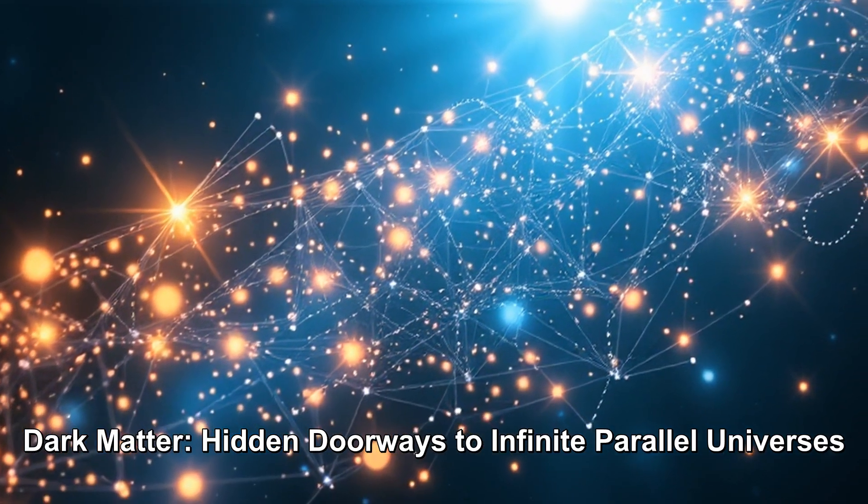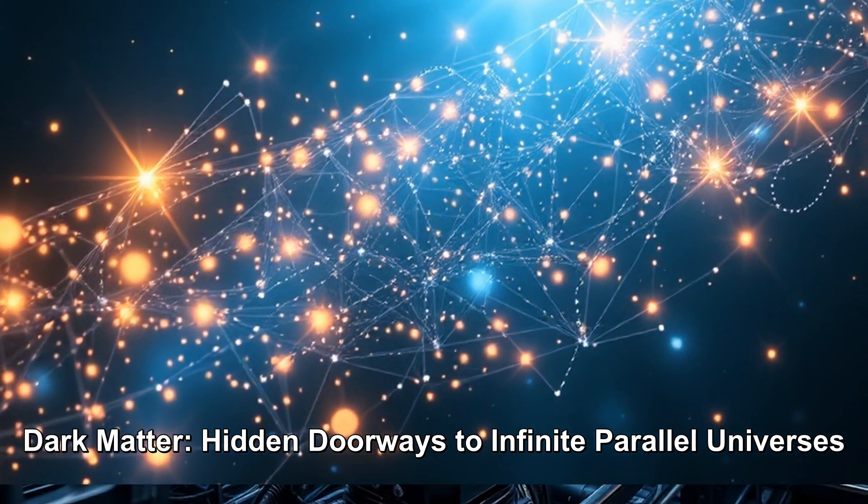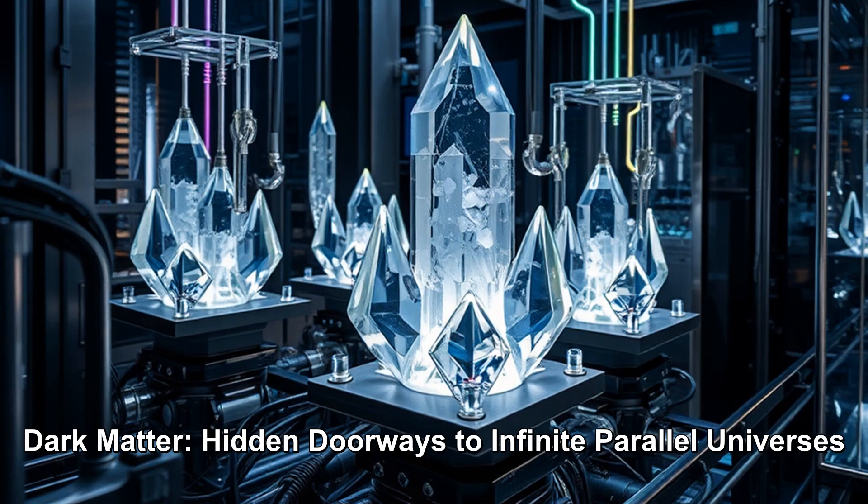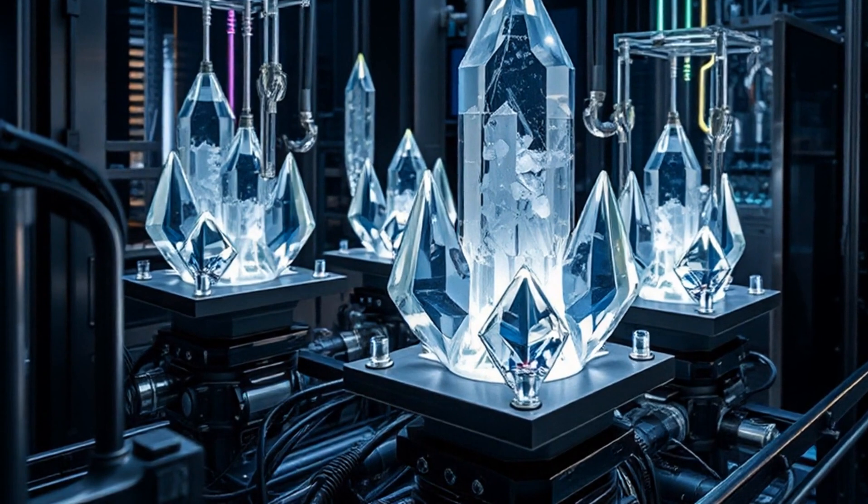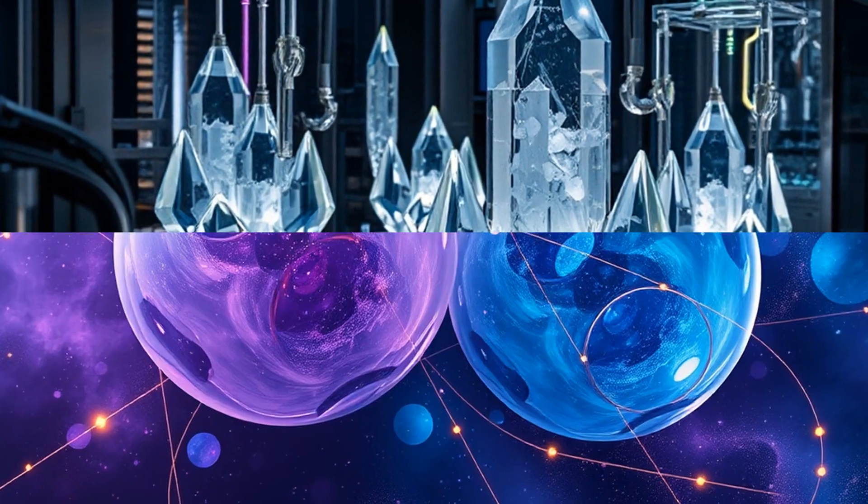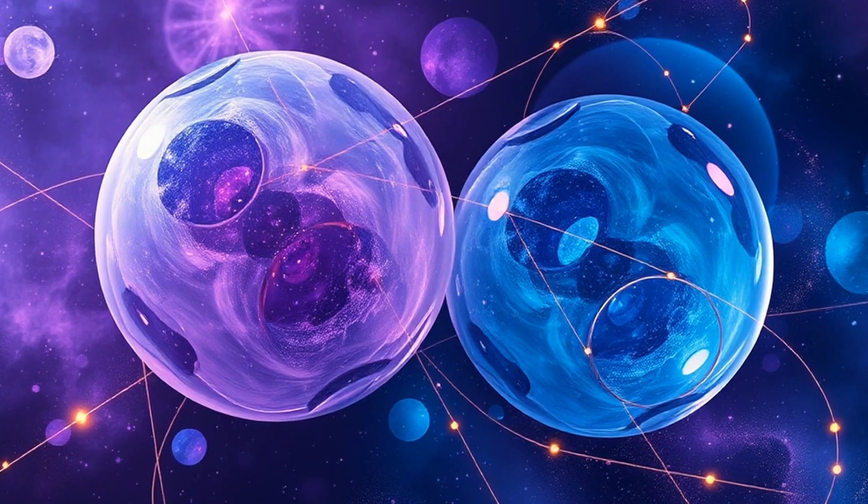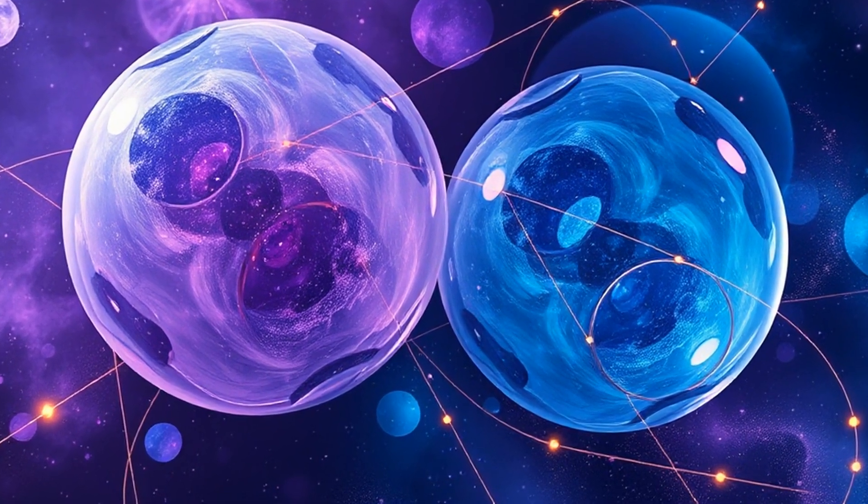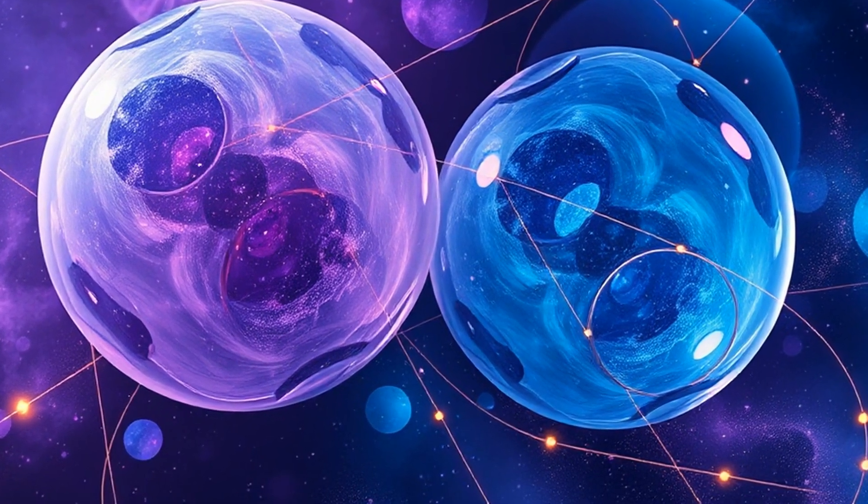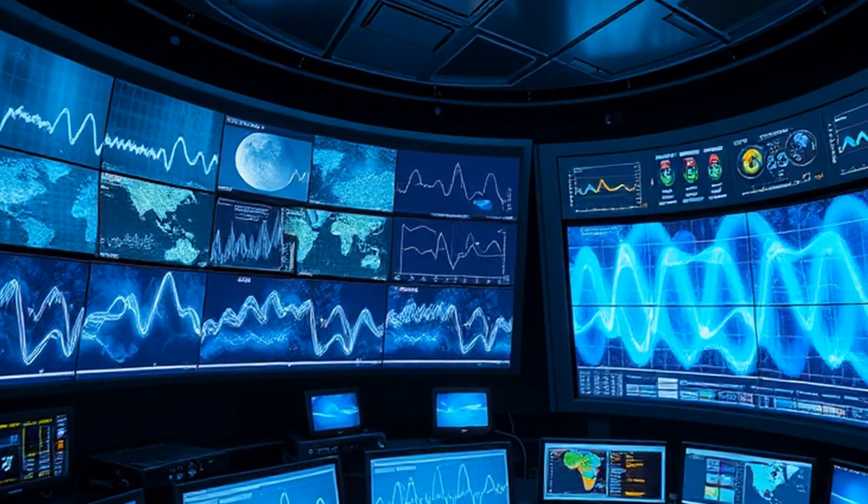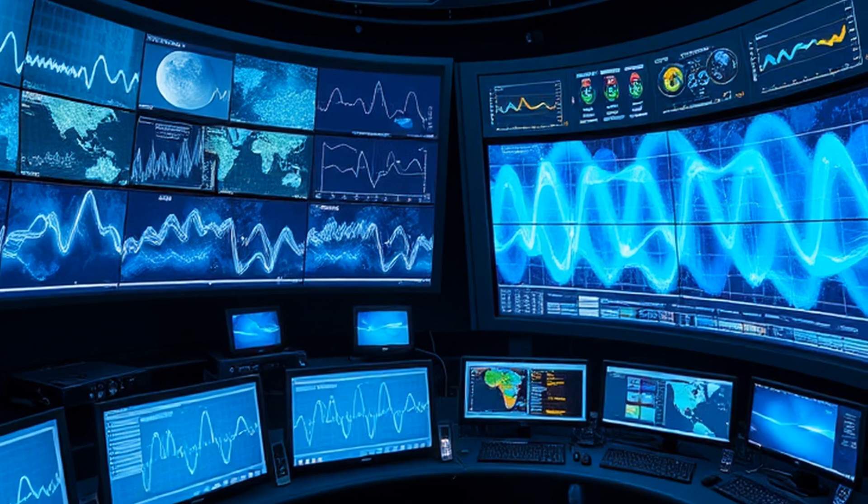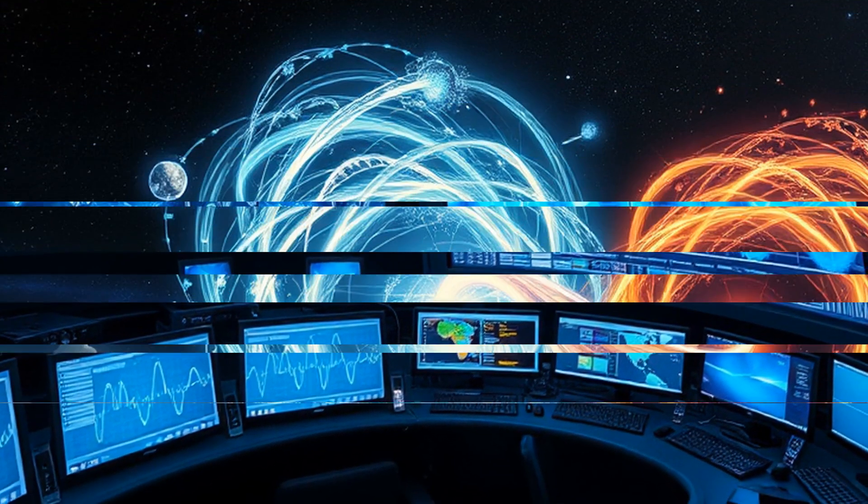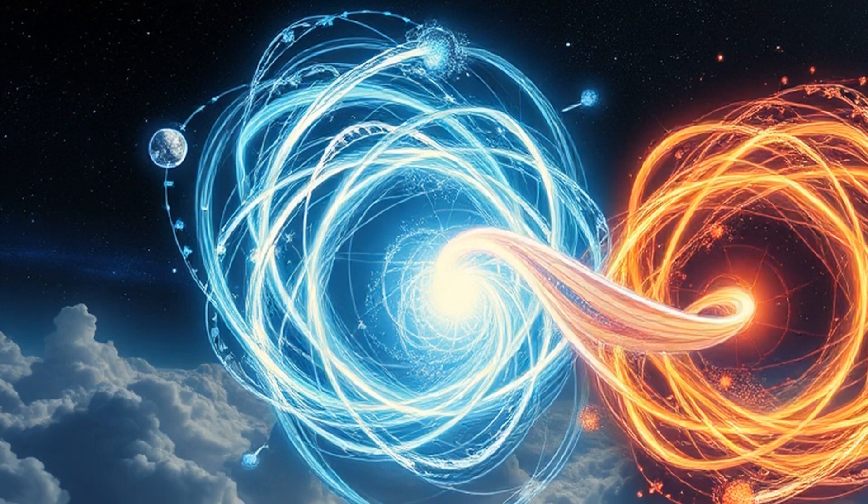Here's where things get really interesting. Dark matter might be more than just mysterious stuff floating around in space. Some scientists think it could actually be the key to how parallel universes connect with each other. Dark matter makes up about 85% of all matter in our universe, but we can't see it or touch it. We only know it's there because of how it affects regular matter through gravity. But what if dark matter isn't just invisible matter in our universe? What if it's actually regular matter from other universes bleeding into ours? This would explain why we can only detect it through gravity, but can't interact with it directly.